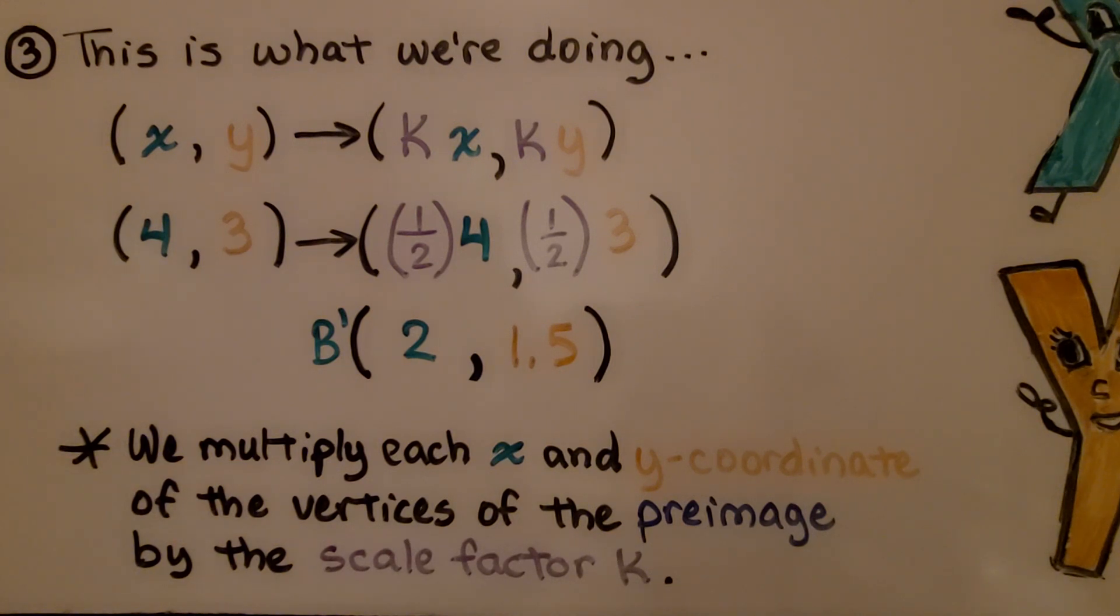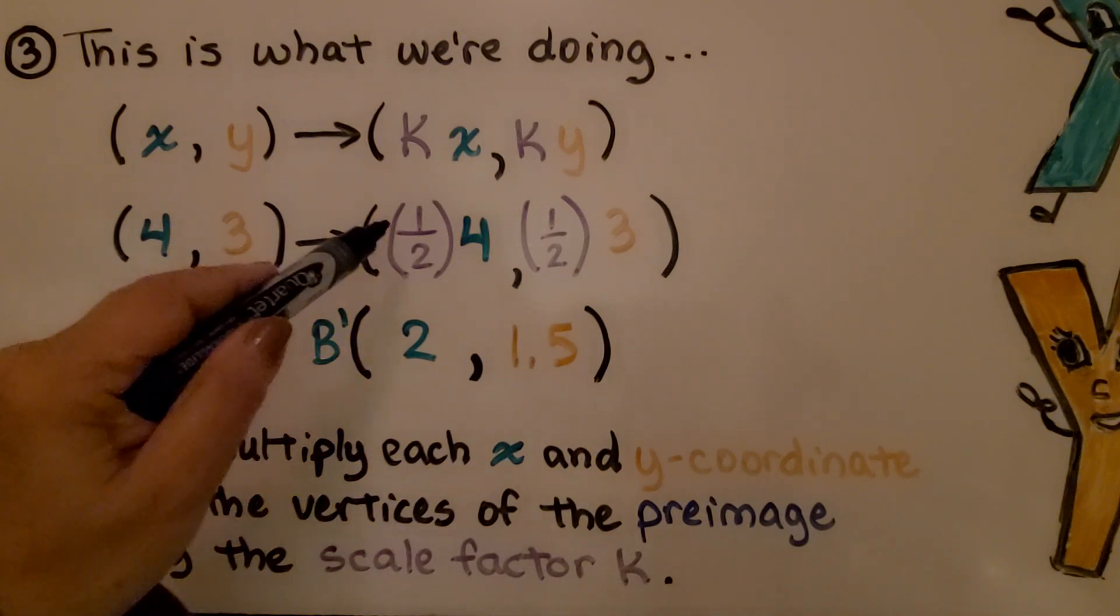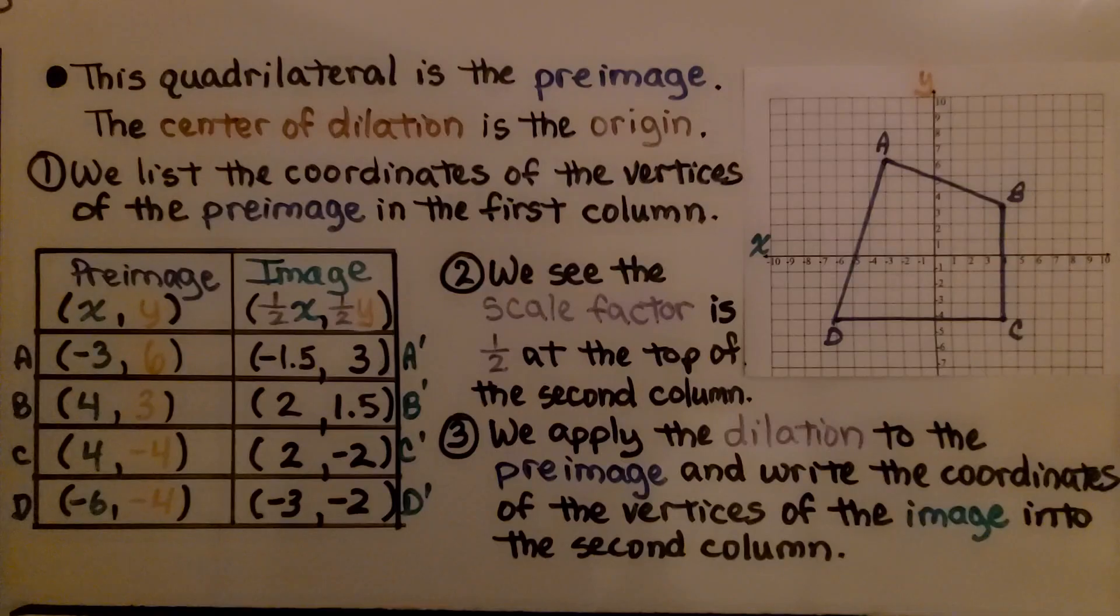We multiply each x and y coordinate of the vertices of the preimage by the scale factor k. We complete the second column of our table.